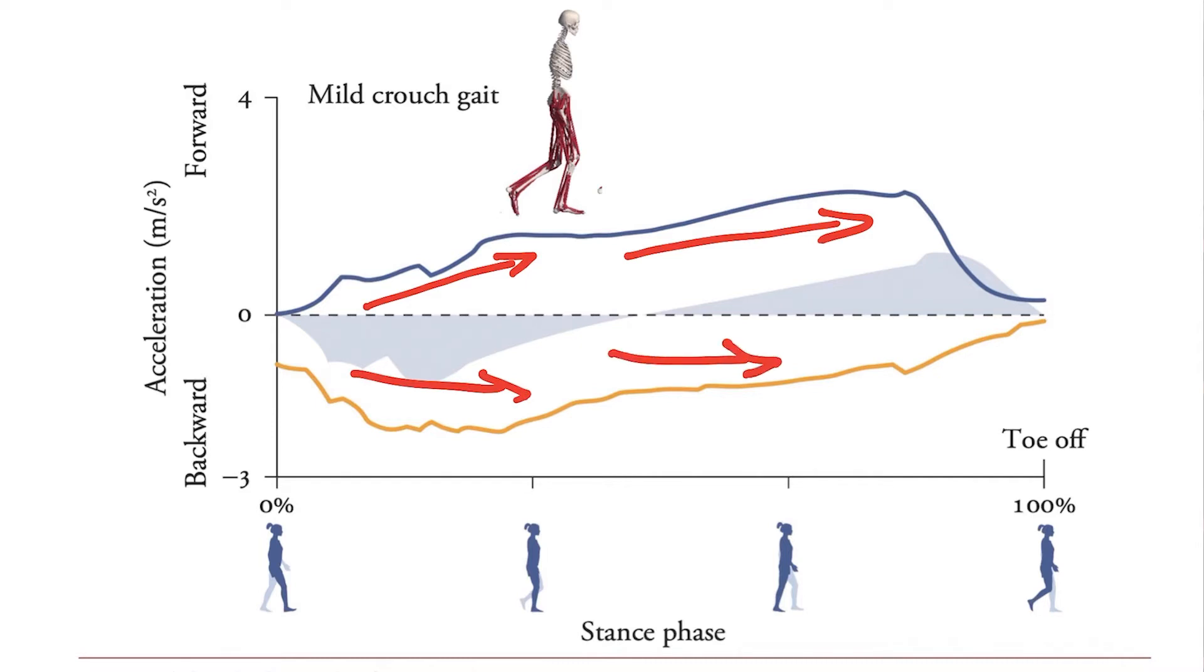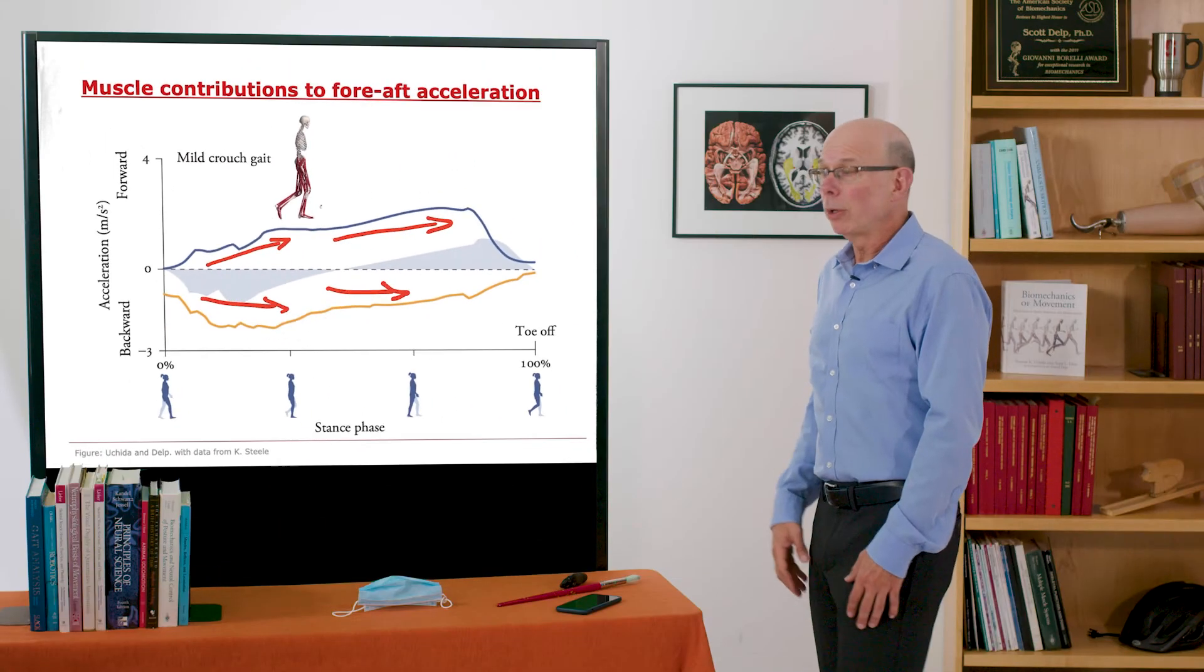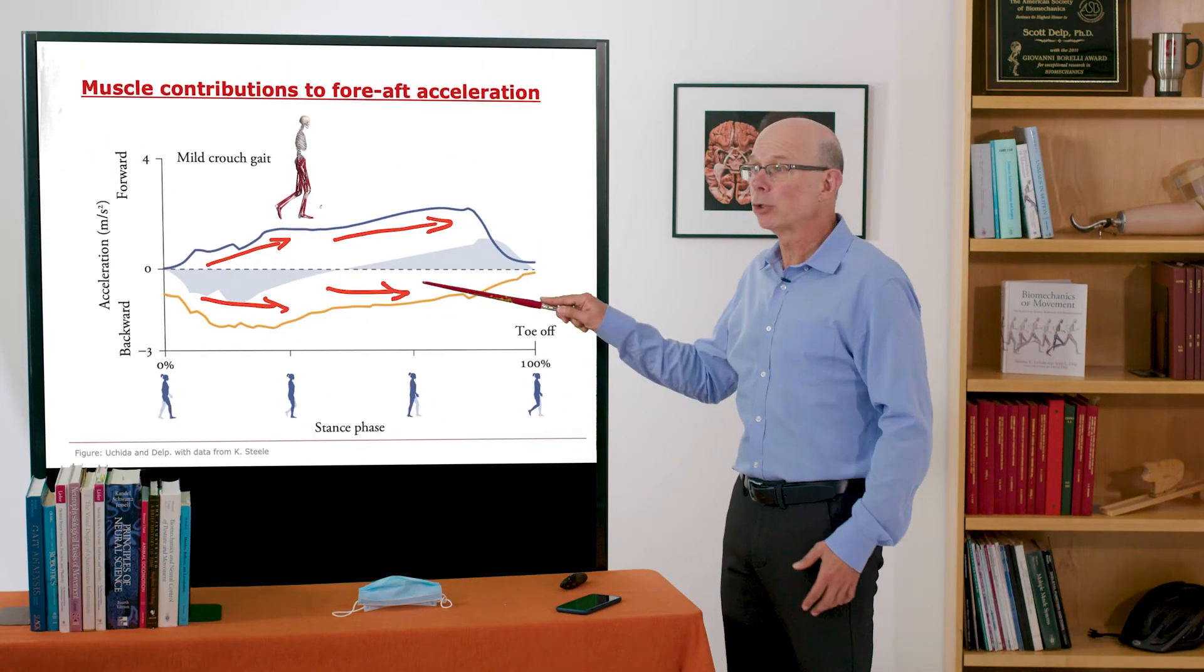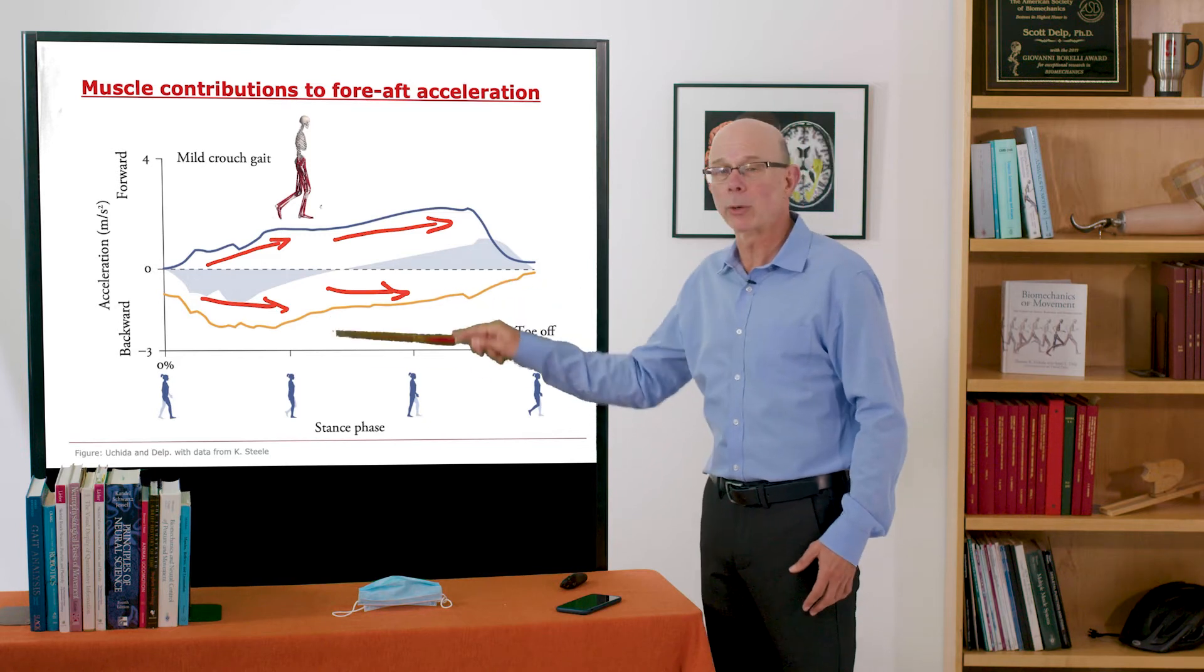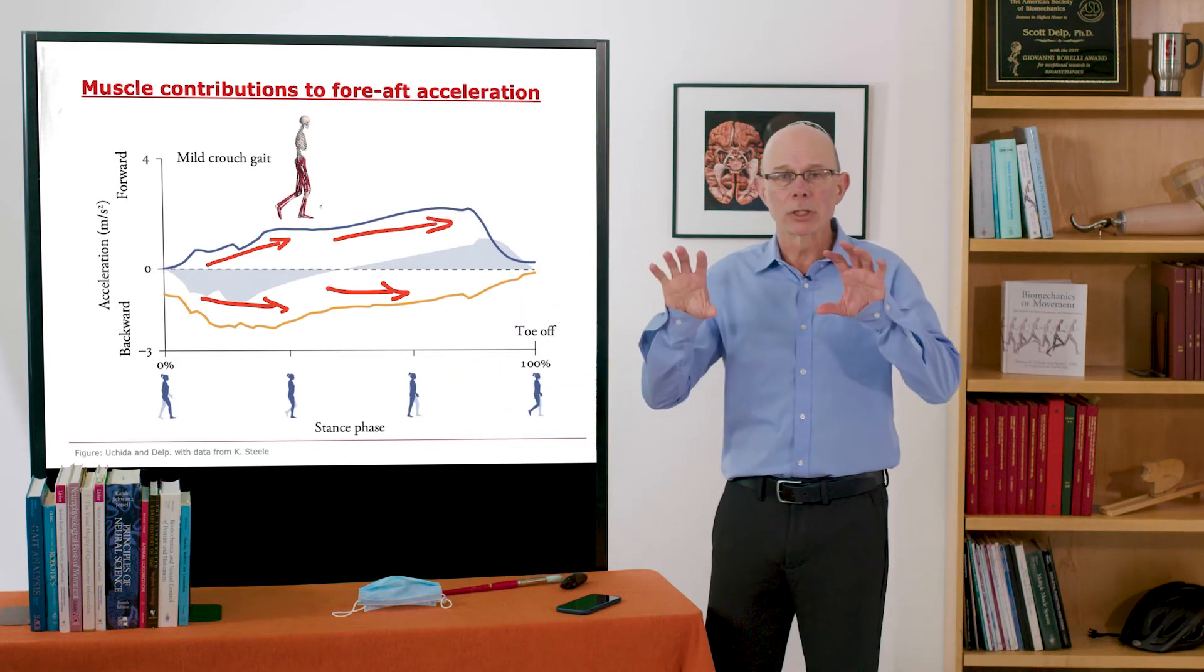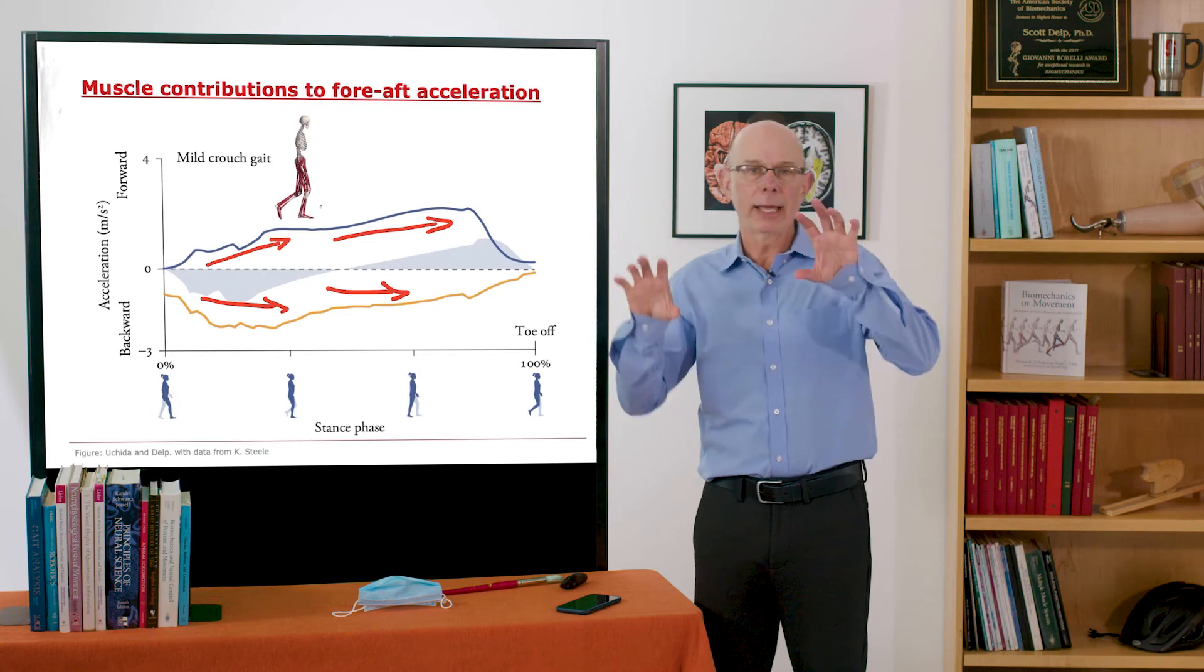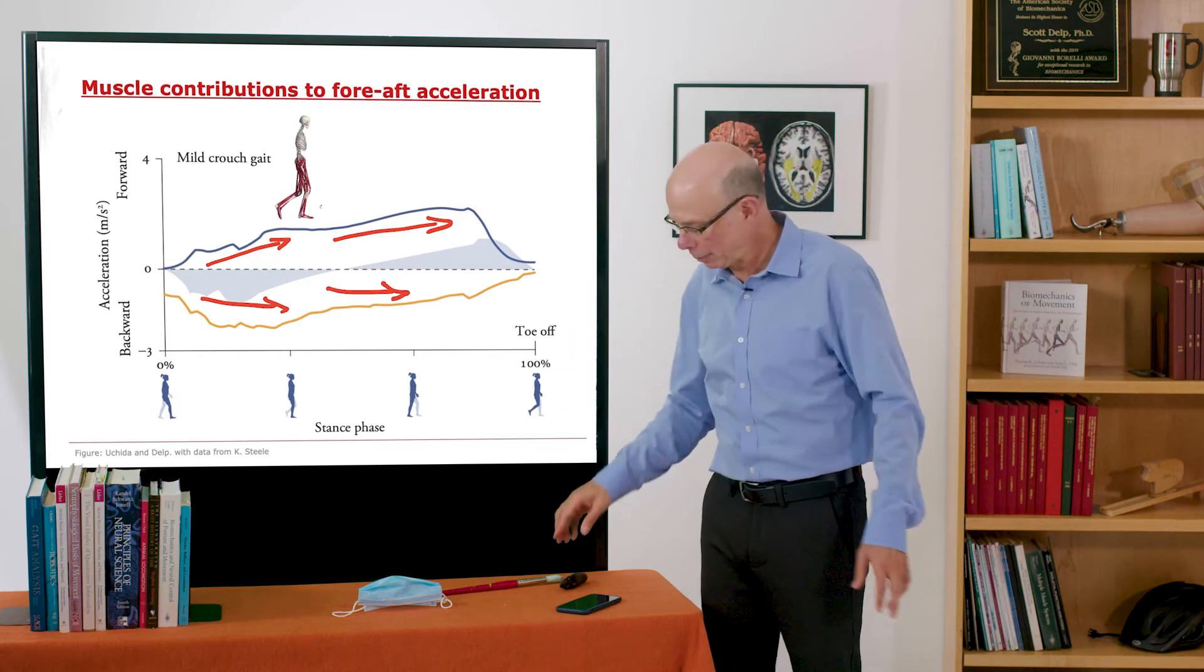You're down in a crouch, so you need your quadriceps to support your body weight otherwise you'll collapse. So these muscles stay on and they produce a backward directed acceleration. So instead of this nicely tuned one and then the other, both muscles are on at the same time.